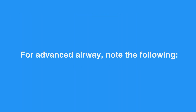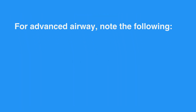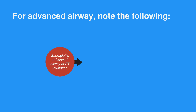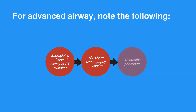For advanced airway, note the following. Use supraglottic advanced airway or ET intubation. Apply waveform capnography to confirm and monitor ET tube placement. Deliver 10 breaths per minute with continuous chest compressions.